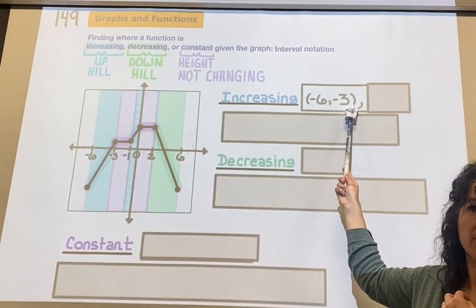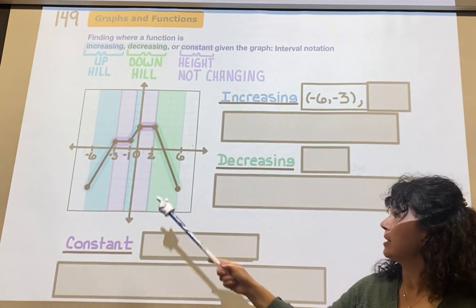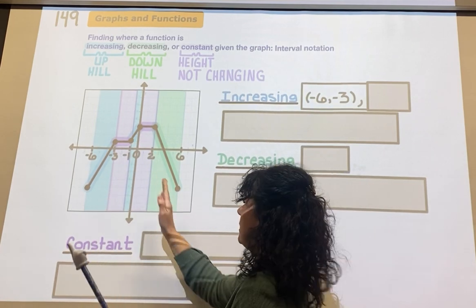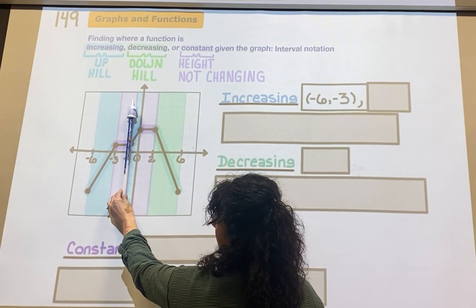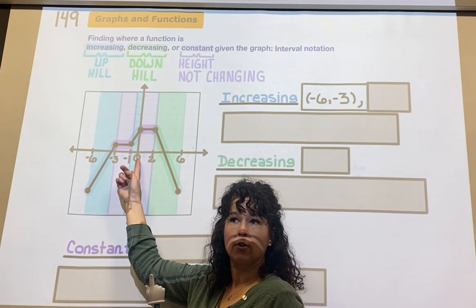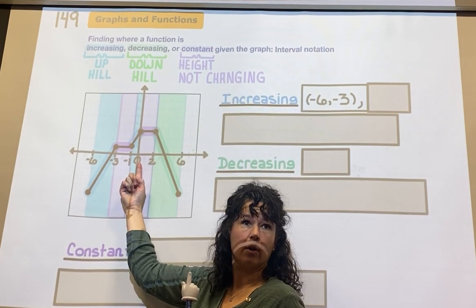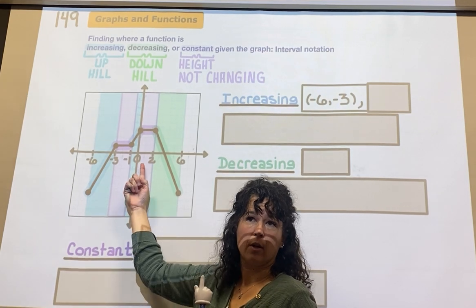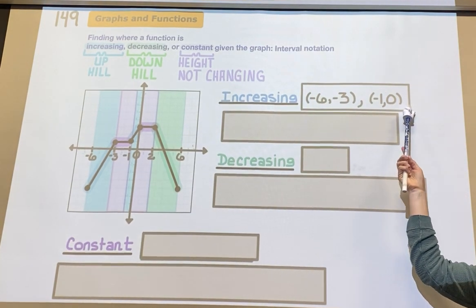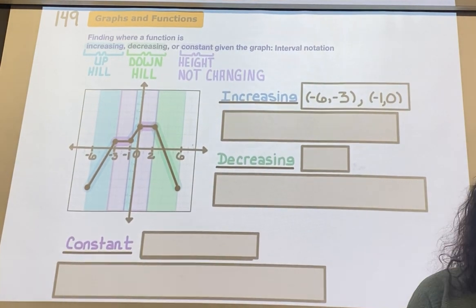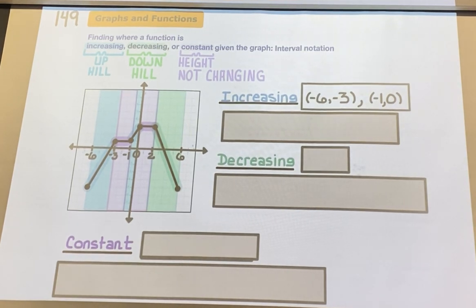Now the next section that's increasing is right here. How would I list that section? It starts at negative 1 and stops going uphill at 0, so I'm going to say negative 1 through 0. Intervals of increasing and decreasing we just use parentheses. Now depending on the format, sometimes you'll see the best notation.